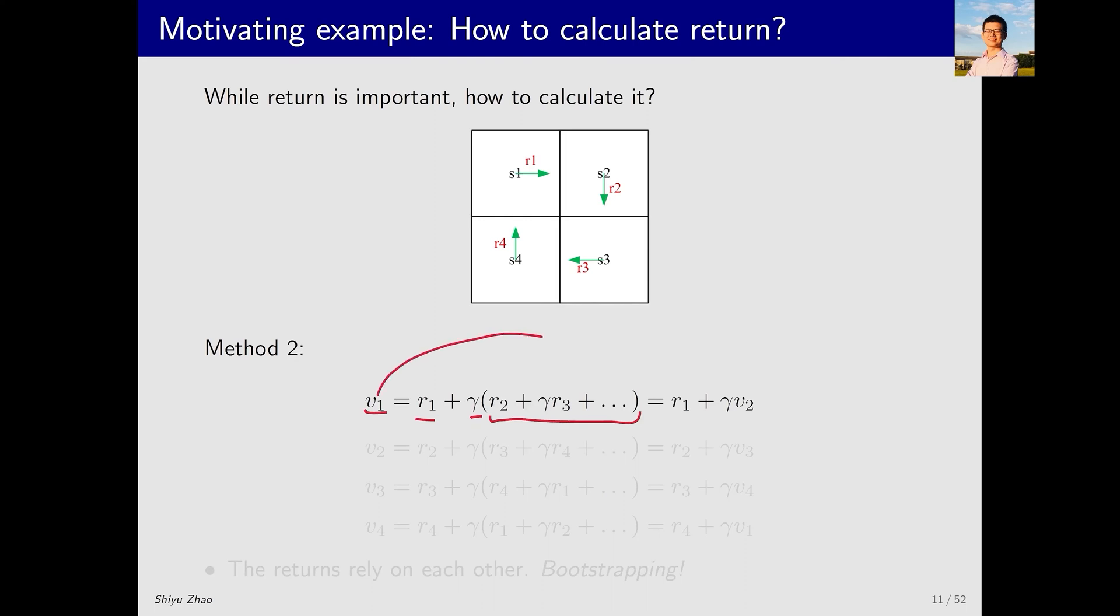Hence, V1 equals R1 plus gamma V2. From a mathematical perspective, it is already very clear, as I have written the latter part like this. What does it intuitively mean? Intuitively, it means starting from here and then moving to here. In this process, first I will receive R1 and then I move to S2. In fact, there is no need to continue the journey, although there is a long trajectory ahead, but that does not matter. Starting from here and moving to S2, the return I get must be V2. Therefore, V1 equals R1 plus gamma V2.